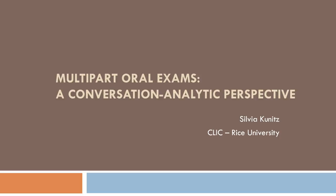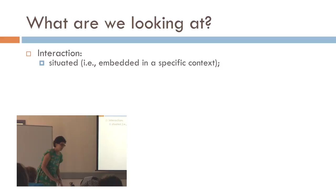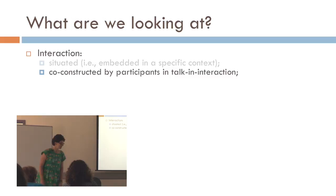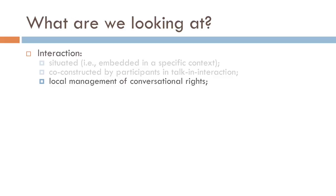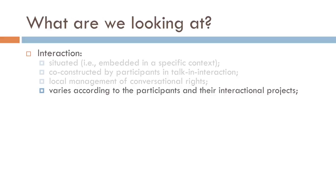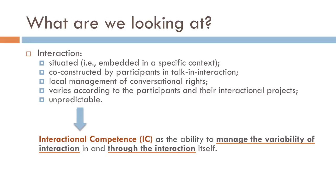In oral exams, we're looking at interaction. Interaction is situated, so it's embedded in a specific context. It's co-constructed by the participants in talk and interaction. Through interaction, the participants locally manage their conversational rights. Interaction clearly varies according to the participants and their current local interactional projects, and it's pretty unpredictable. We're looking at interaction because we want to look at the student's interactional competence, which can be defined as the ability to manage the variability of interaction in and through the interaction itself.